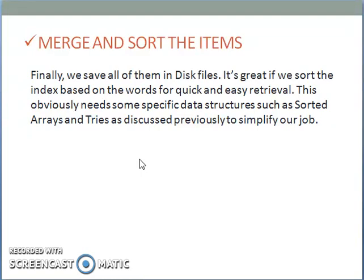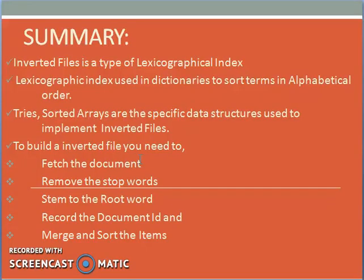To summarize: inverted files are a type of lexicographical index. Lexicographic indexing is used in dictionaries to sort terms in alphabetical order. Tries, sorted arrays, and other hashing structures are the specific data structures used to implement inverted files. To build an inverted file, you need to fetch the document, remove the stop words, stem to the root word, record the document ID, and merge and sort the items. Thank you.